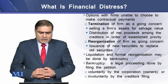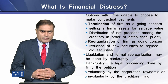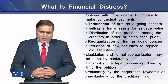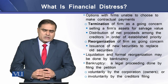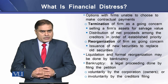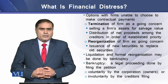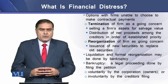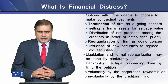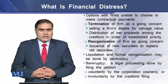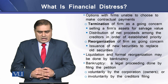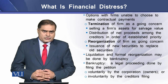There are two options available to a firm that is unable to make contractual payments: termination of a firm as a going concern, and reorganization of a firm as a going concern. In the first case, the firm sells its assets for salvage value and the net proceeds are distributed among creditors in a preset order. In the second option, the firm issues new securities to replace its existing or old securities.